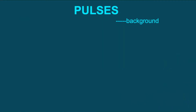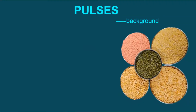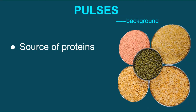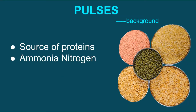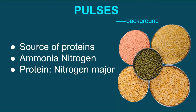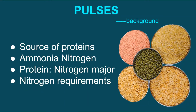Legumes, mostly pulses, well known as a source of protein in the vegetarian diet, have the unique ability to convert atmospheric nitrogen gas to ammonia, a form usable by the plants. This is interesting because nitrogen is the main constituent in protein making, and nature has made excellent provision for pulses to meet 50 to 80% of the total nitrogen requirements, while the remaining nitrogen comes from soil or other input sources.